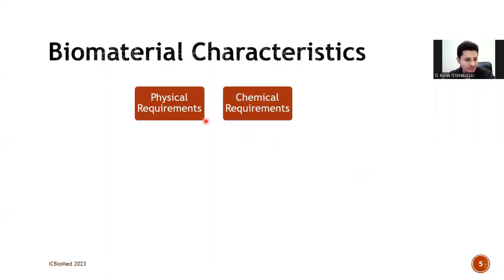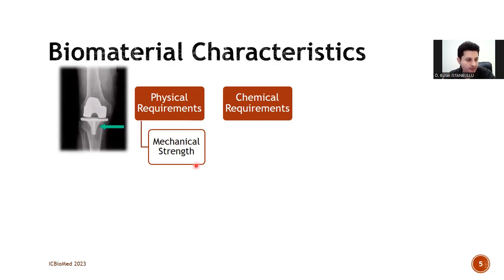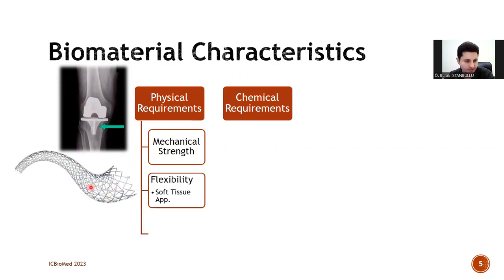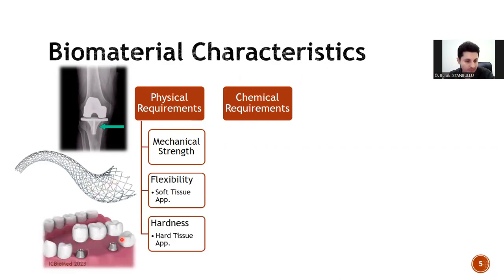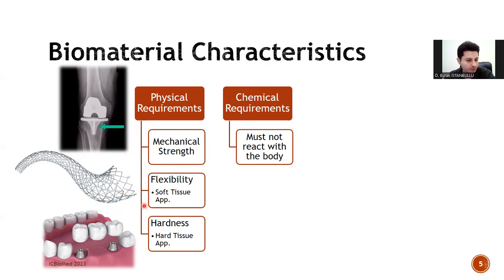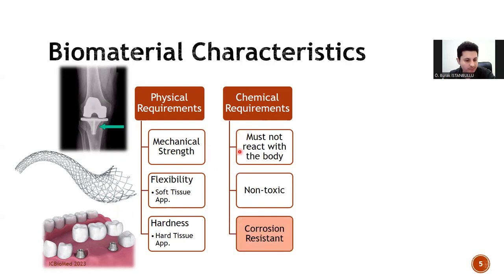There are some expectations from biomaterials depending on their functionality. Therefore, physical and chemical features are required for a proper biomaterial. In addition to being strong enough for load-bearing applications such as knee joint replacements, flexibility for cardiovascular stents and hardness for dental applications are also main physical characteristics expected from a biomaterial. These features may vary depending on the body region where the implant is used, and thus material selection in biomaterial production also differs. Regardless of the biomaterial design, there are common chemical requirements: they must be chemically passive and not react with the body in ways that cause toxic effects, and therefore must also have non-toxic features.